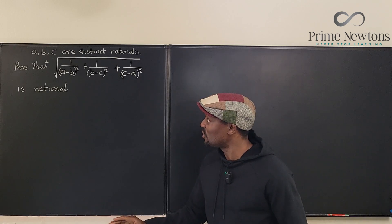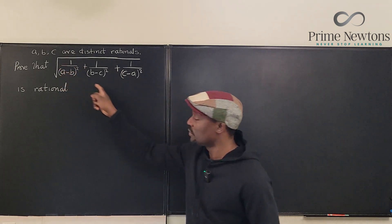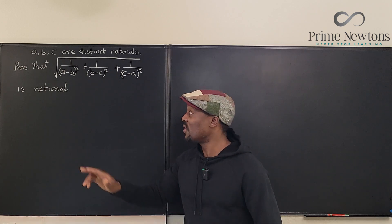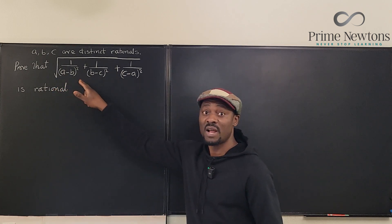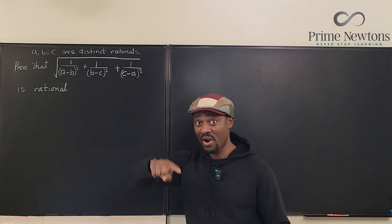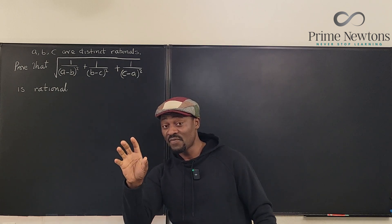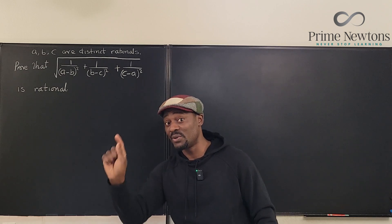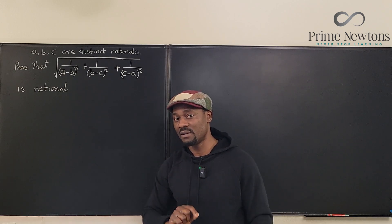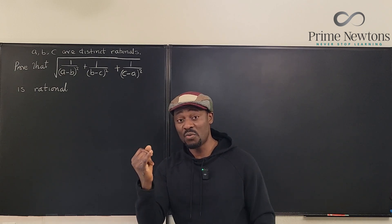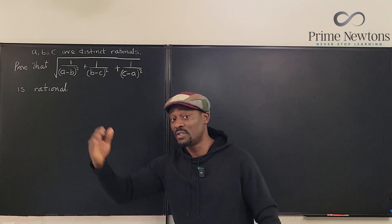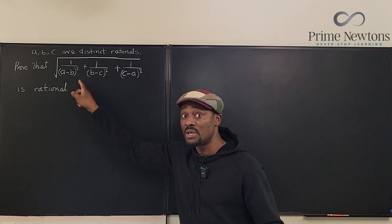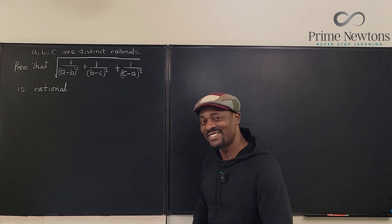All we have to do is show that what we have under the square root sign is a perfect square, because that's the only way you're going to get a rational number out of this. Any time you write a square root over a number, that number is automatically irrational unless the number under the square root sign is a perfect square — so it has to be 0, 1, 4, 9, or something of that nature. That's going to be the mission, no matter what A, B, and C are. Let's get into the video.